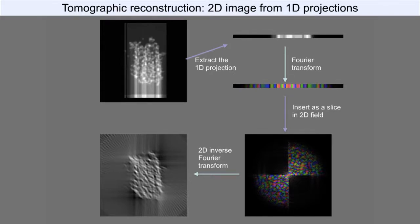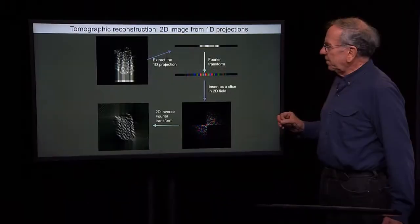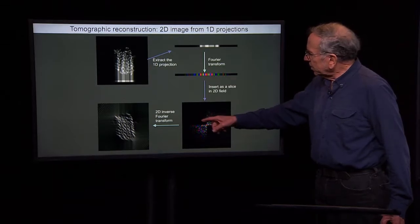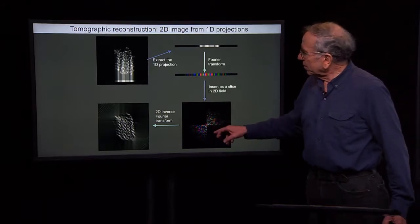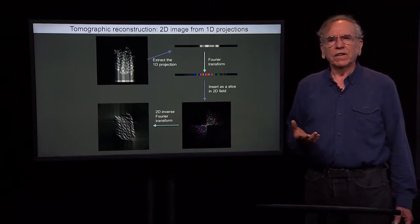And you can see it's not perfect, but you can begin to recognize it. It has artifacts, and these artifacts are due to this missing wedge of information in these two missing wedges of information in the Fourier transform.